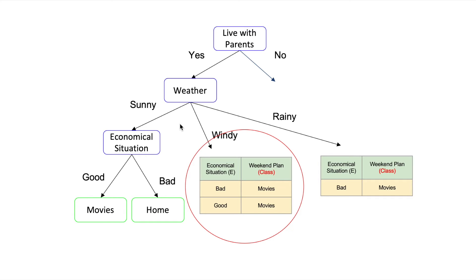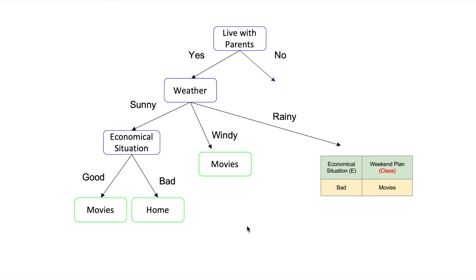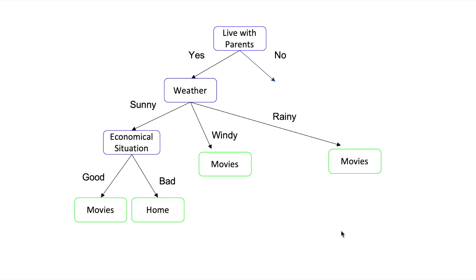When weather is windy, we obtain a table where all rows belong to the same class, so we replace that branch with a leaf node. Finally, when weather is rainy, again all rows belong to class movies, so we replace that part with a leaf node for movies. The left part of the tree is now mostly complete.